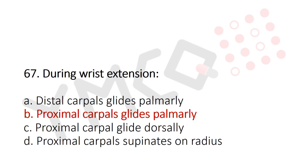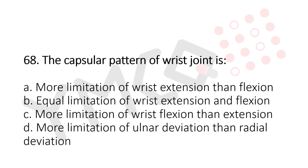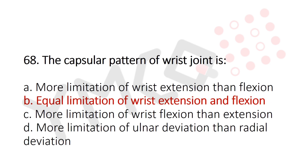Question 68: The capsular pattern of the wrist joint is — Option A: more limitation of wrist extension than flexion, Option B: equal limitation of wrist extension and flexion, Option C: more limitation of wrist flexion than extension, Option D: more limitation of ulnar deviation than radial deviation. The answer is Option B, equal limitation of wrist extension and flexion.